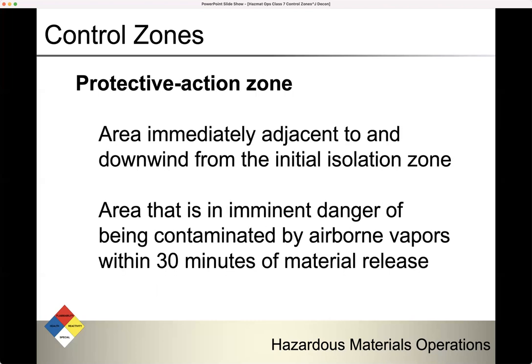The protective action zone is the area immediately adjacent to and downwind from the initial isolation zone. This is the area in imminent danger of being contaminated by airborne vapors within 30 minutes of material release. In the ERG, in the blue and yellow sections, the highlighted materials are considered toxic inhalation hazards. Those are the materials for which you go to the green section to determine the protective action distance. When you spread it out left or right of that distance, that's your protective action zone.